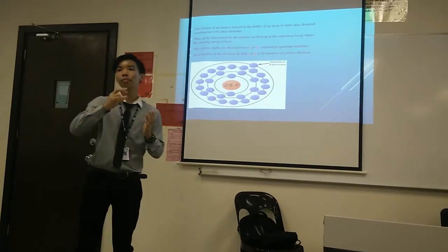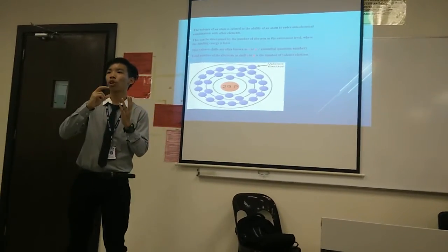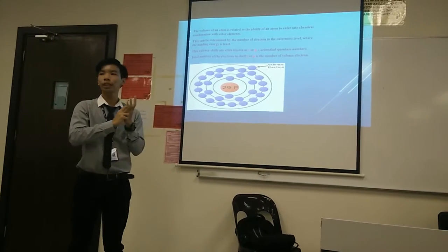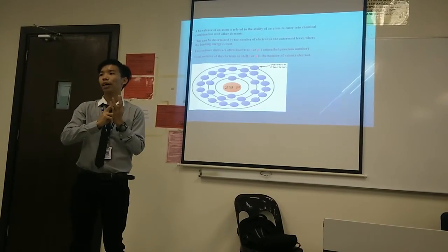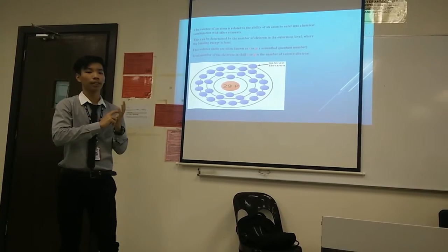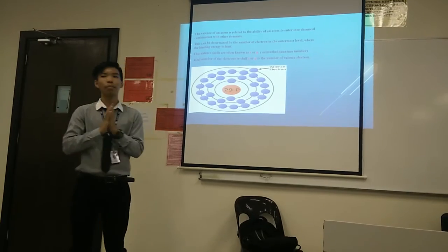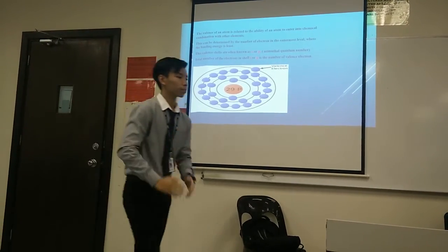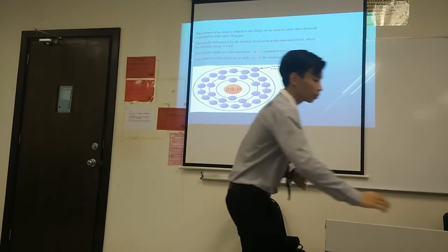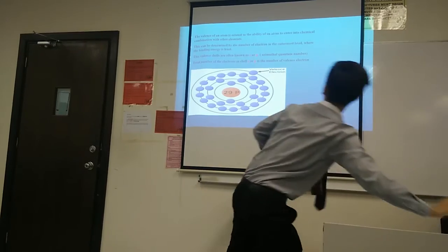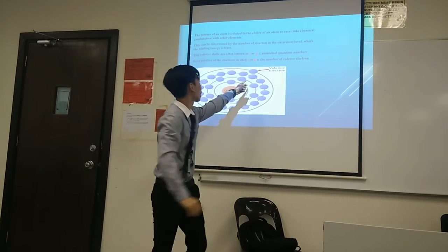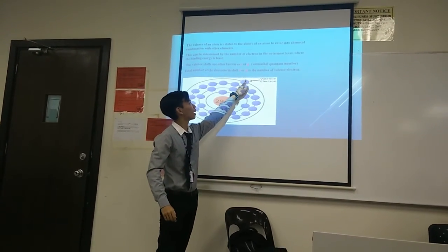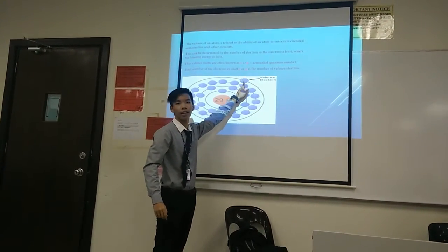The total number of electrons in the shells S and P is known as the number of valence electrons. Now, this is the example of the outermost level. This is the valence electron.